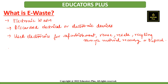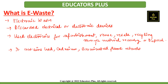E-waste contains hazardous materials, and the hazardous content poses a threat to both human health and the environment. For example, electronic scrap components such as CPUs contain potentially harmful materials such as lead, cadmium, and brominated flame retardants. It also involves significant risk to the health of workers as well as communities.